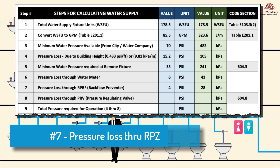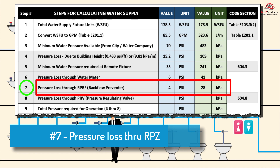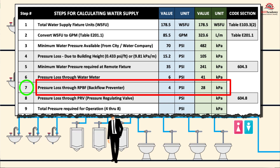Step 7: Pressure Loss Through Backflow Preventer. A reduced pressure backflow assembly (RPZ) is used to prevent dirty water from reversing flow and contaminating the clean water supply. If required, the pressure drop must be included in the total pressure loss calculation. In our example, the pressure drop through the backflow preventer is 4 PSI or 28 kPa.